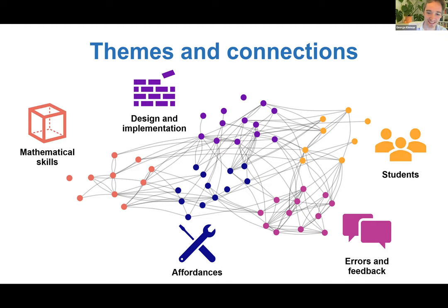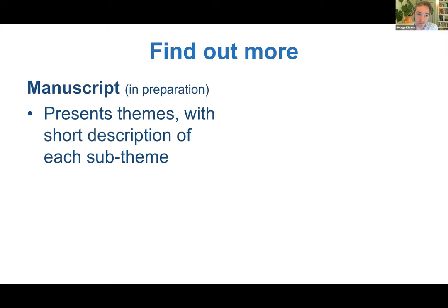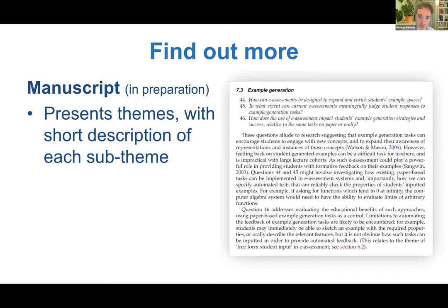So that's the agenda as it stands — 55 questions. There are two outputs. The first is the manuscript, which will explain the method we've used and document the whole process. For each of the themes, which contain 10 to a dozen questions split into sub-themes of two to four closely related questions, we'll present each with a narrative: here's an example for the example generation question group, presenting the questions as they appear in the agenda and then two or three paragraphs summarizing what those questions are about and how they connect to existing literature.